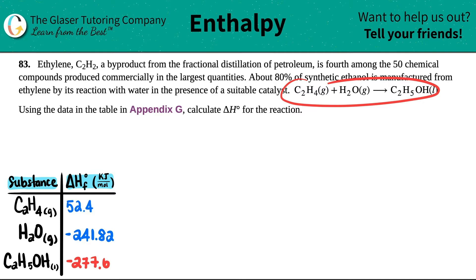And then they give us this reaction right here. So it's C2H4 gas plus H2O gas yields ethanol, which is C2H5OH liquid. Using the data in the table in appendix G, calculate delta H for the reaction.